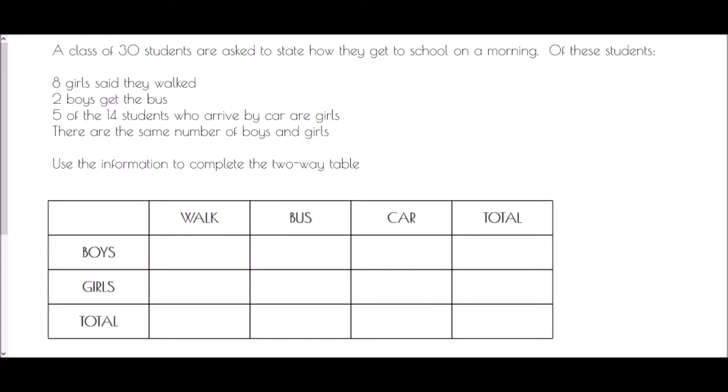We've only actually been given four pieces of information, yet we have 12 different boxes in our table that we need to fill in. It doesn't seem to be enough, but if we take each little piece at a time, it will build up to a point where we can work out the individual values. The very first thing is the fact that there are 30 students — that is the total number of people, our total total. So 30 goes in the very final box.